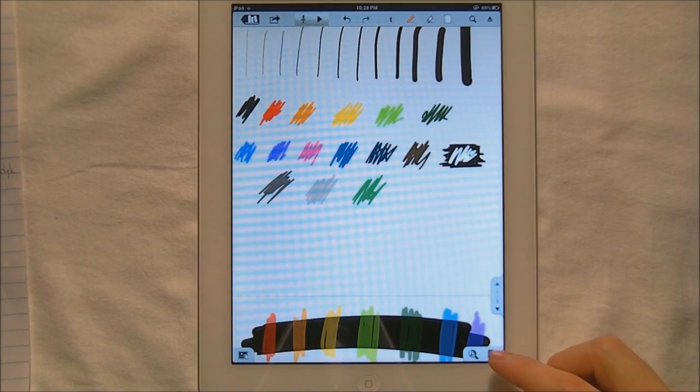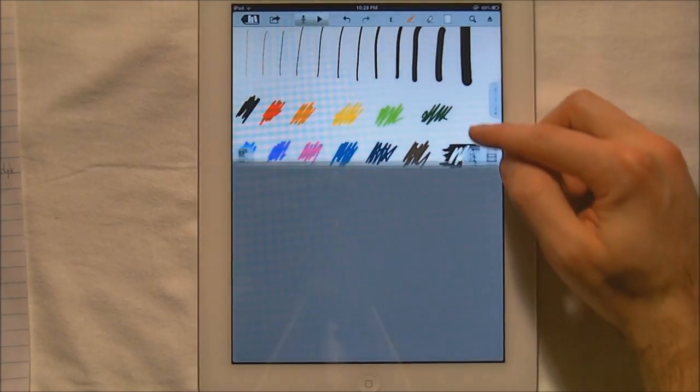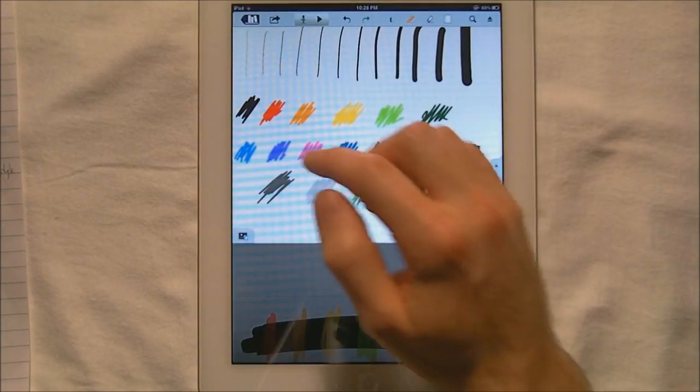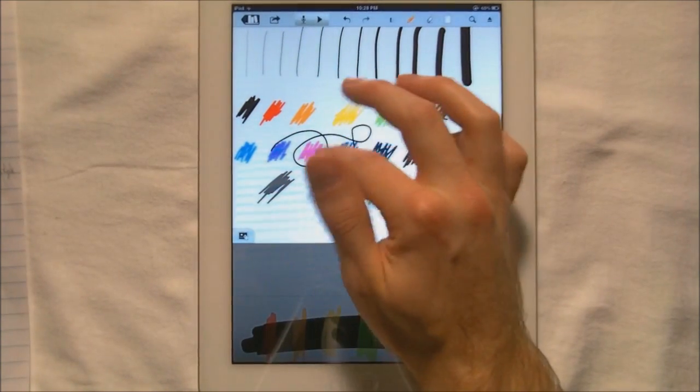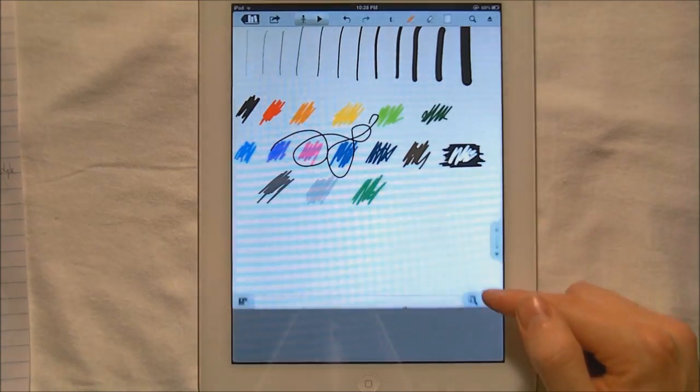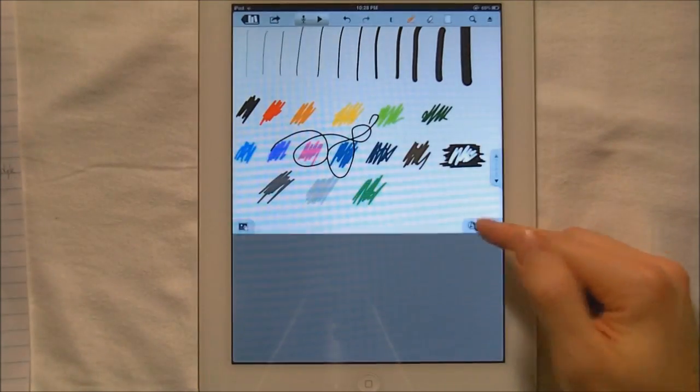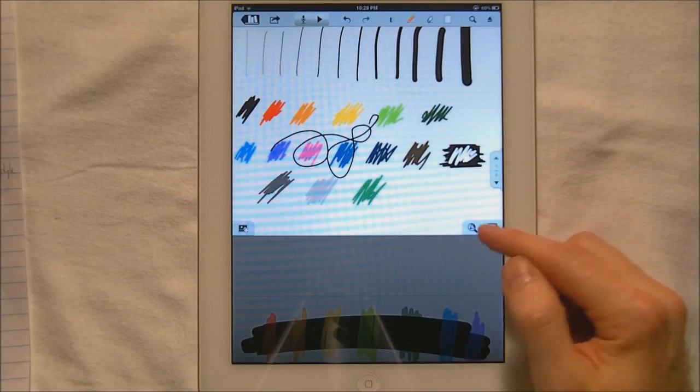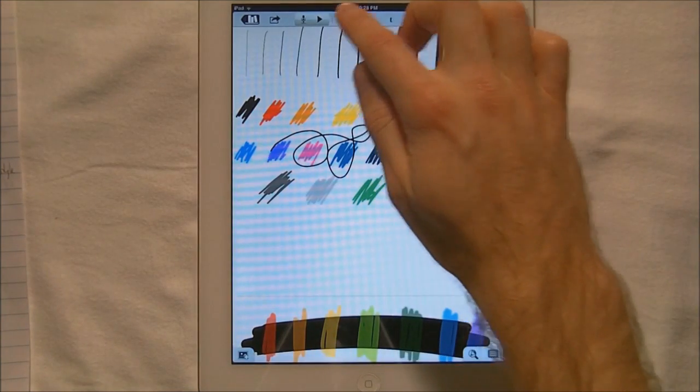One other neat thing is that it has a palm rest guard. So you can drag this up. It can rest your palm and you can just write on here, whatever, and nothing will happen down here. So that's really cool if you lean your arm on here while you're actually writing either with a stylus or with your hand. So I'm just going to undo that.